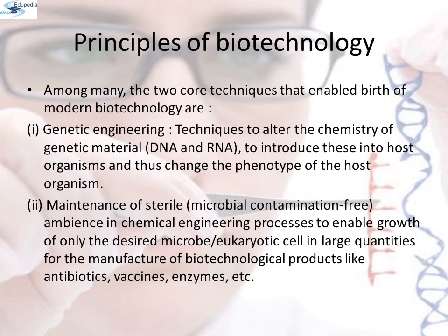Principles of biotechnology: among many, the two core techniques that enable the birth of modern biotechnology are: first, genetic engineering — the techniques to alter the chemistry of genetic material DNA and RNA, to introduce these into host organisms and thus change the phenotype of the host organism. Second, maintenance of sterile, microbial contamination-free ambience in chemical engineering processes to enable growth of only the desired microbe or eukaryotic cell in large quantities for the manufacture of biotechnological products like antibiotics, vaccines, enzymes, etc.